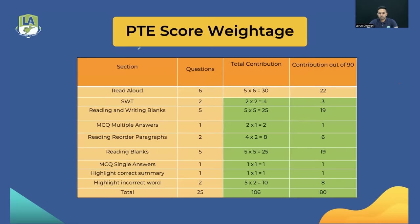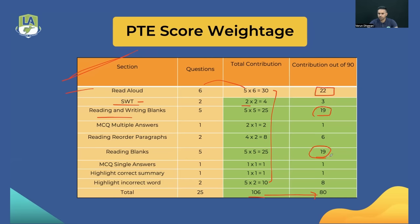For reading, points come from several sources: Read Aloud contributes five points per question from speaking; Summarize Written Text contributes two content points transferred to reading; and within the reading module itself you have Reading-Writing Blanks, MCQ Multiple, Reorder Paragraphs, Reading Blanks, MCQ Single Answer, Highlight Correct Summary from listening, and Highlight Incorrect Words from listening. The total is 106 raw points.